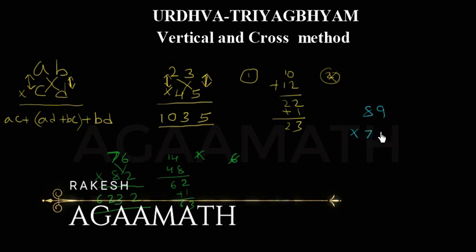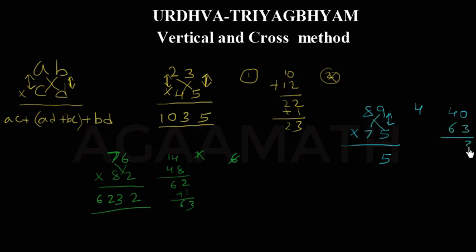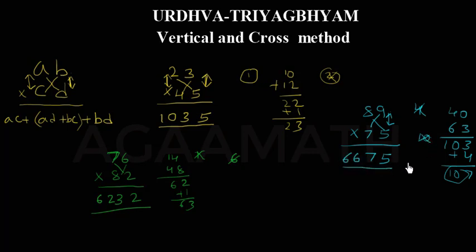Let us take 89 into 75. First, 9 into 5 is 45, write 5 and carry 4. Now cross: 8 into 5 is 40 and 9 into 7 is 63, total 103, plus carried 4 is 107. Write 7 and carry 10. Then vertical: 8 into 7 is 56, plus carried 10 is 66. So 89 into 75 is 6675.